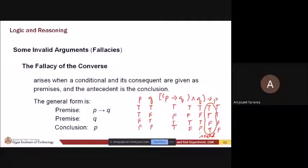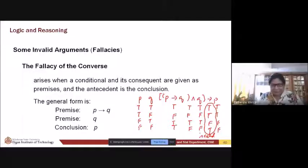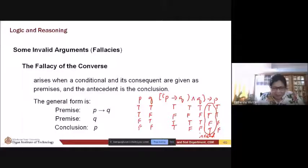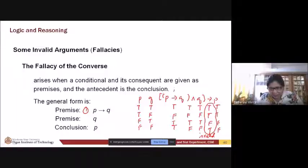A student asks about the notation — about p implies q and then q implies p. The teacher clarifies: the first premise is p implies q, and the second premise is q. When you have one premise plus another premise, you use the notation accordingly.